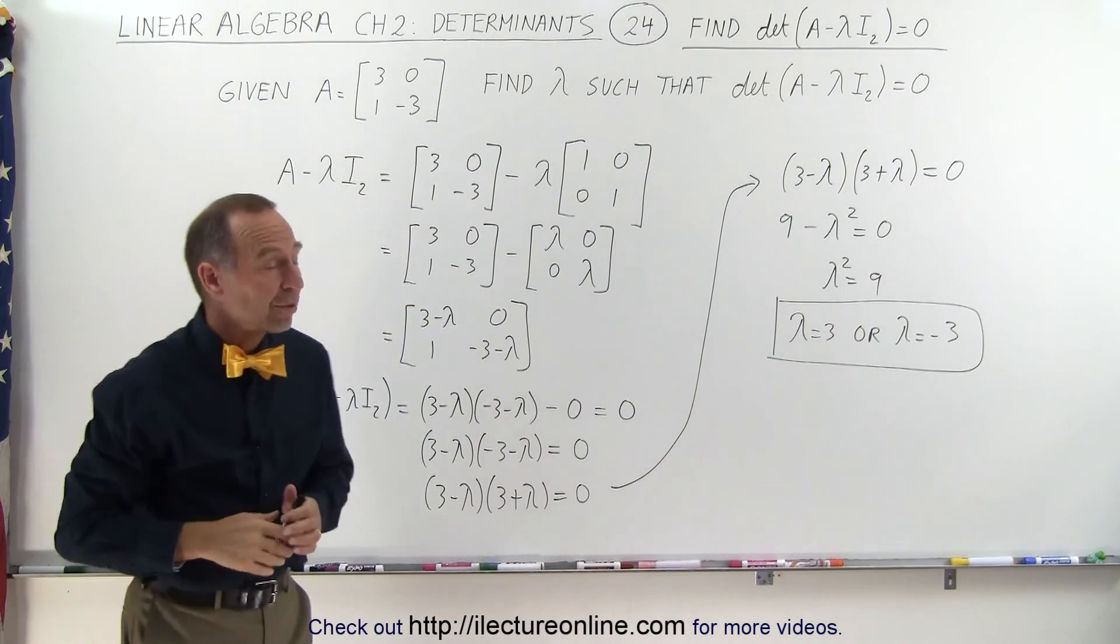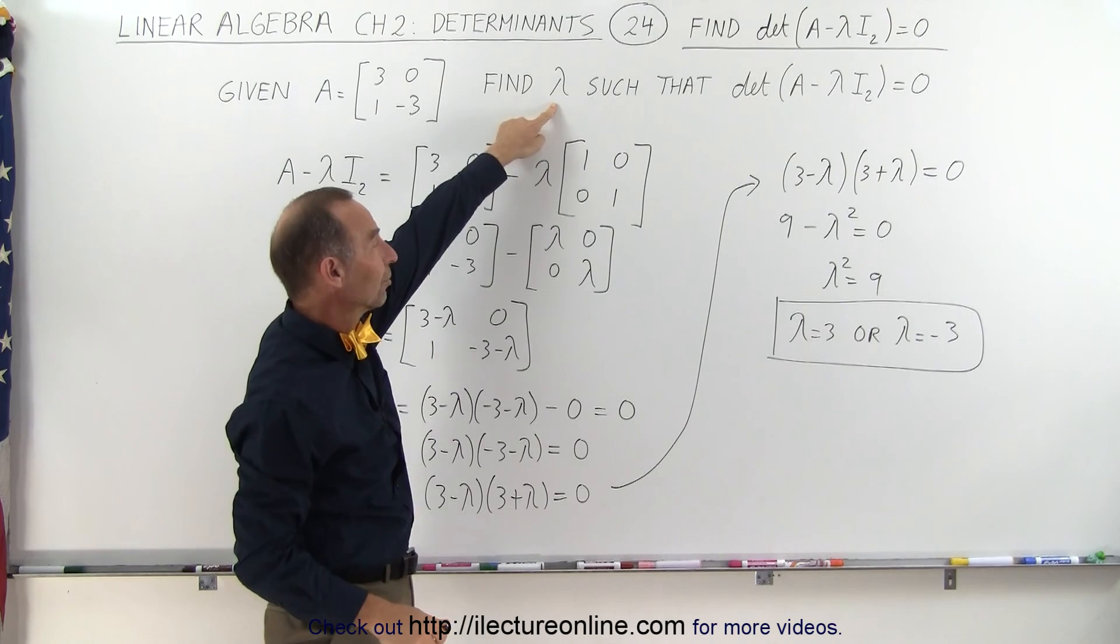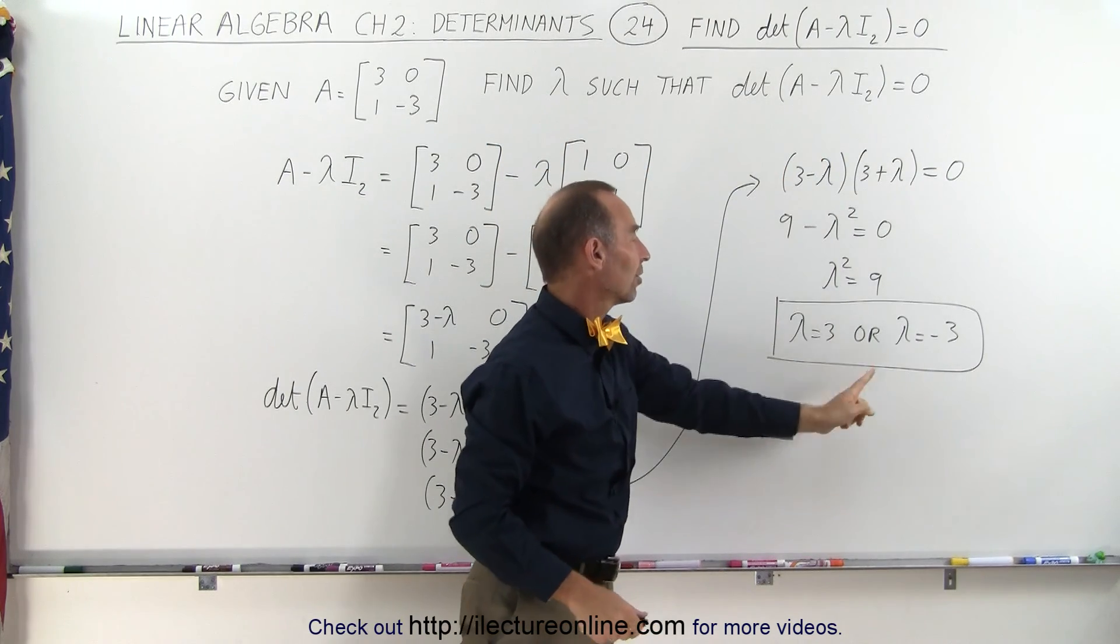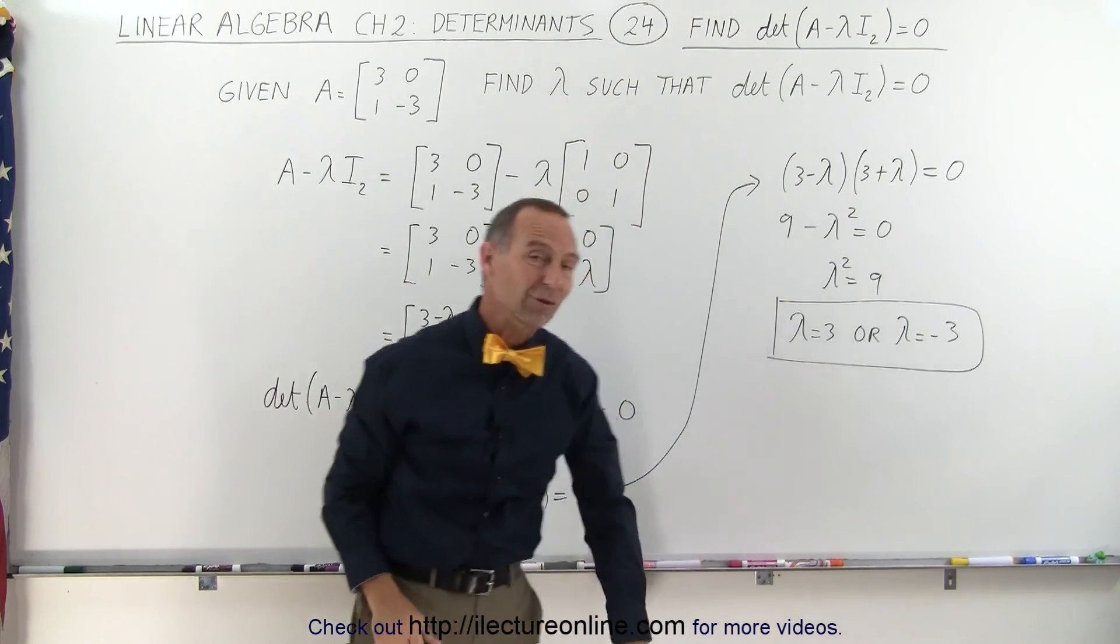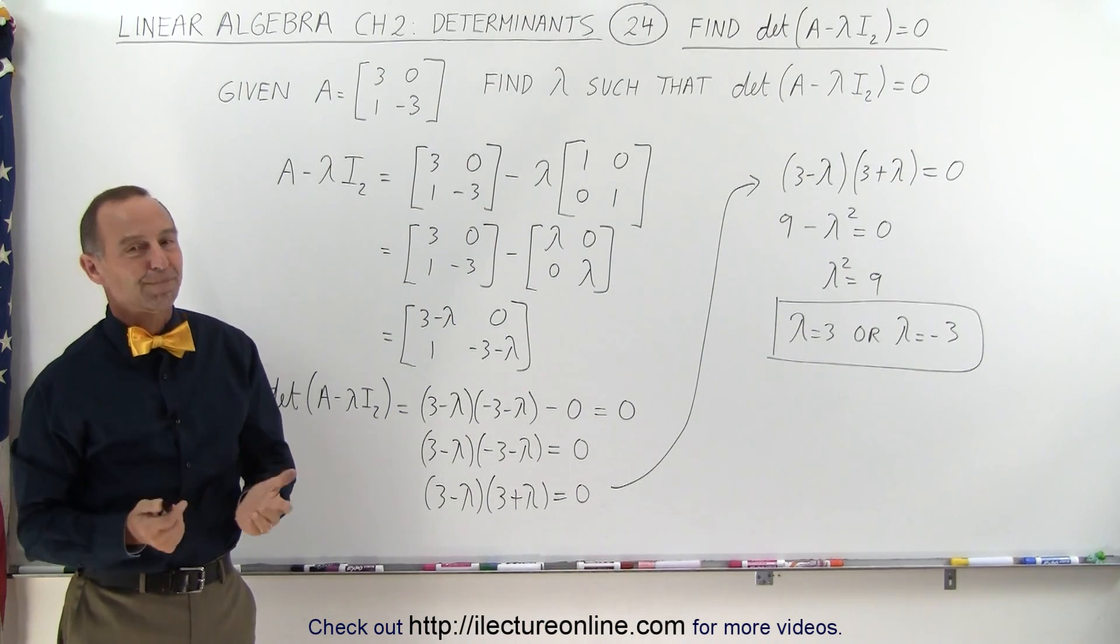And so we've accomplished what we set out to accomplish. We were looking for that unknown constant lambda such that the determinant of this combination here equals 0. And the solution is lambda equals 3 or lambda equals negative 3. That's how it's done.